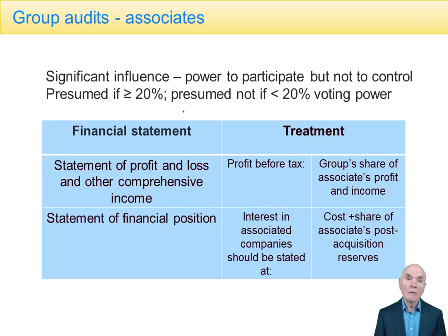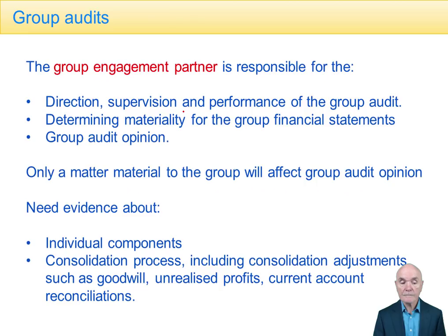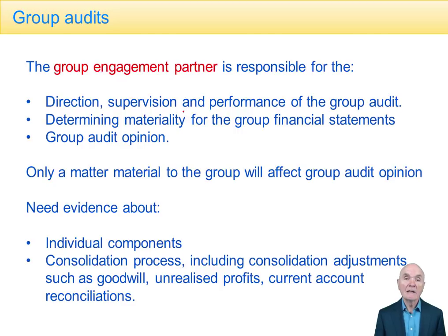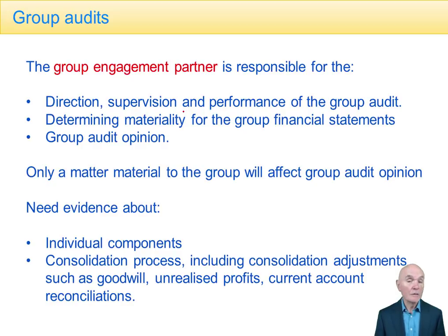So the first step is to know what the group is — know what the components are and what the appropriate accounting treatment is for both the statement of financial position and the statement of profit or loss. It's important to realise that the group engagement partner is responsible for everything to do with the audit of the group financial statements, and is not even allowed to mention that some parts may have been audited by third party auditors. The group engagement partner is responsible for the direction, supervision and performance of the group audit, and also for assessing materiality for the group financial statements.